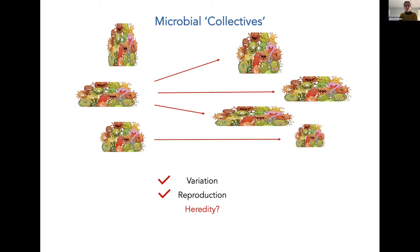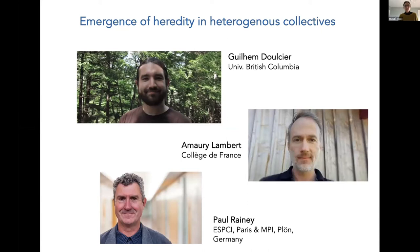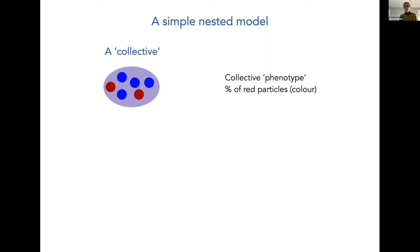The work I'll talk about was mainly realized by a former PhD student, Guillaume Dussier, who is going to start his postdoc at the University of British Columbia soon, in collaboration with Amaury Lambert at Collège de France and Paul Rainey at ESPCI and the Max Planck Institute in Plön. Our view of what is a collective is very simplified: the collective is made of parts — units called particles — of two types, a blue type and a red type. The collective as a whole has a property that is the percentage of blue particles, and basically the color of the collective will be its phenotype.